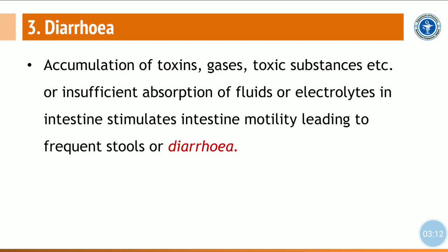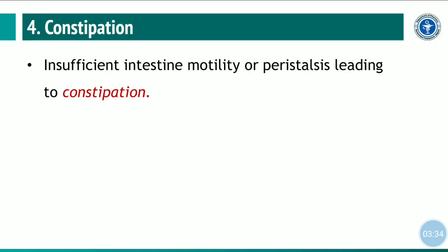The third condition is diarrhea — accumulation of toxins, gases, toxic substances, bacterial or viral infection, or insufficient absorption of fluids or electrolytes in the intestine stimulates intestinal motility, leading to frequent stools. The fourth condition is constipation, which is insufficient intestinal motility or peristaltic movement leading to constipation.